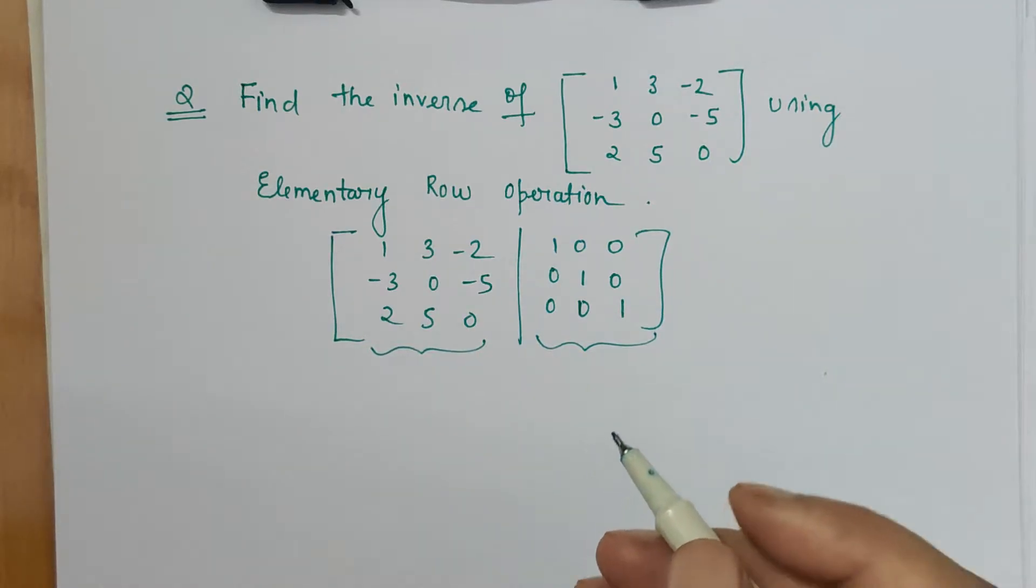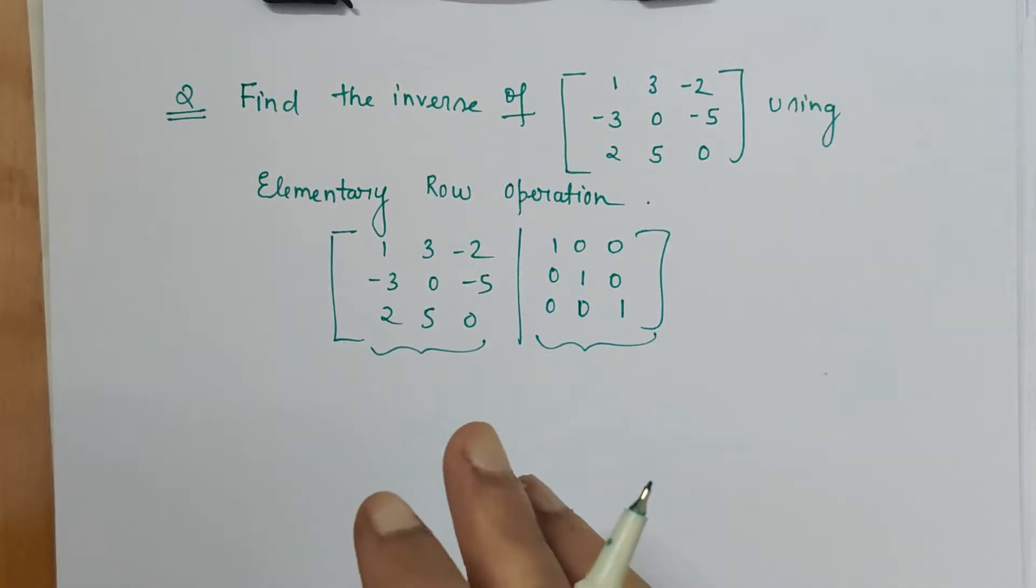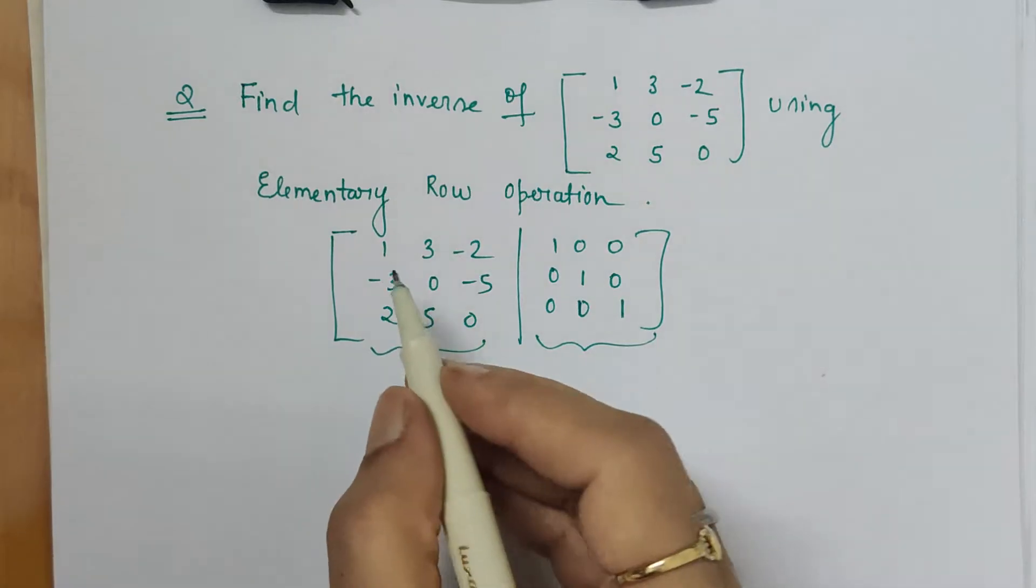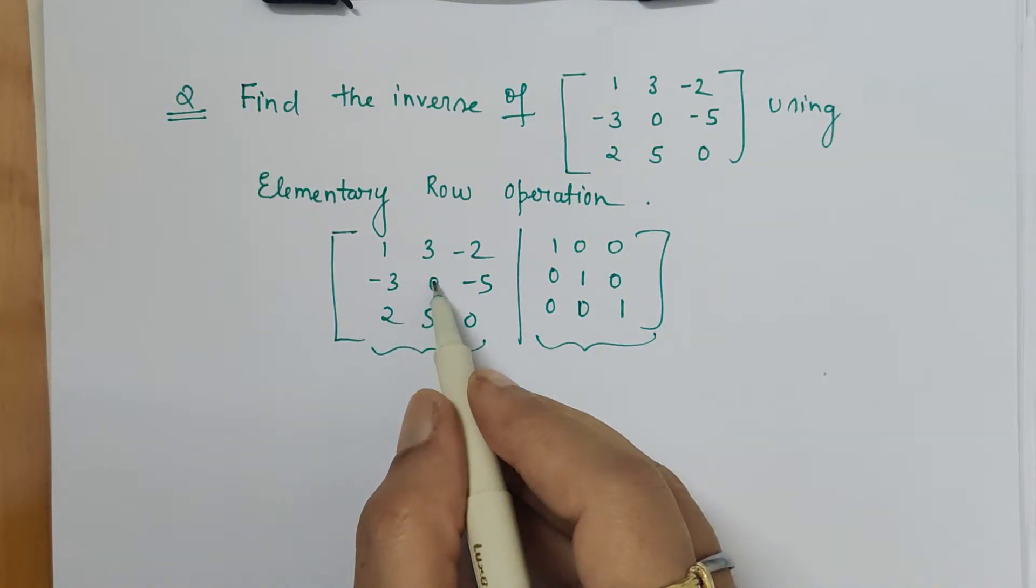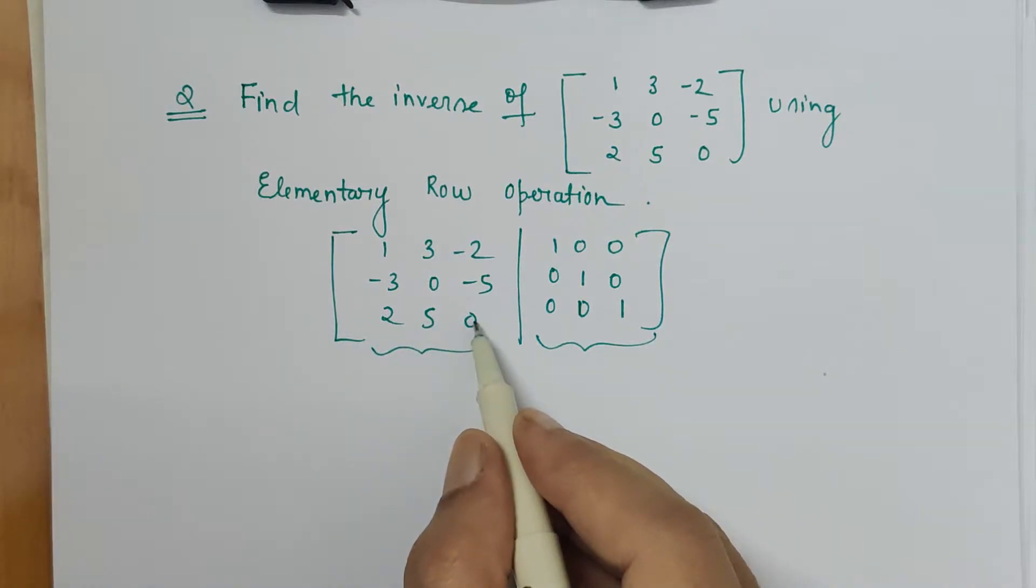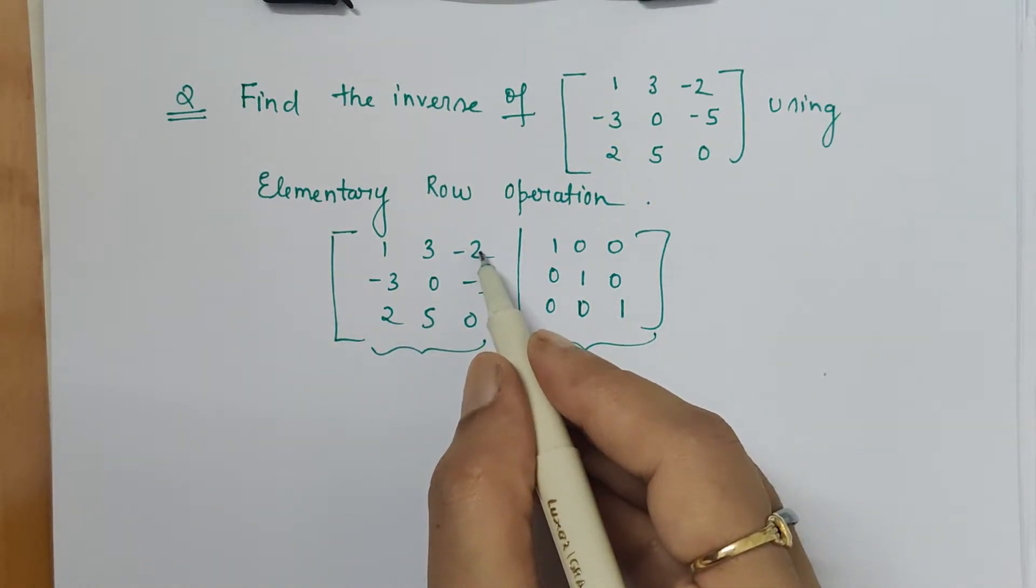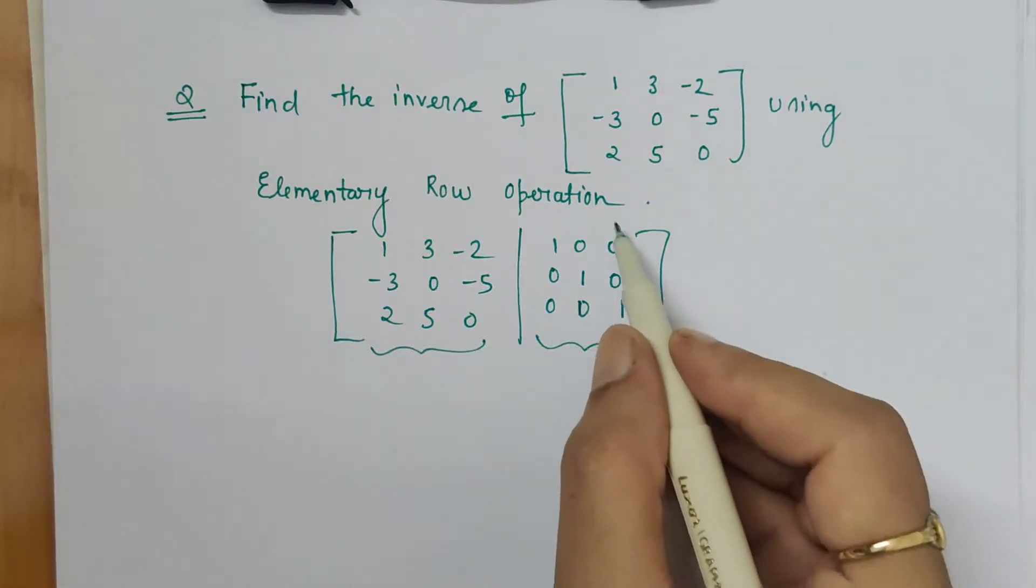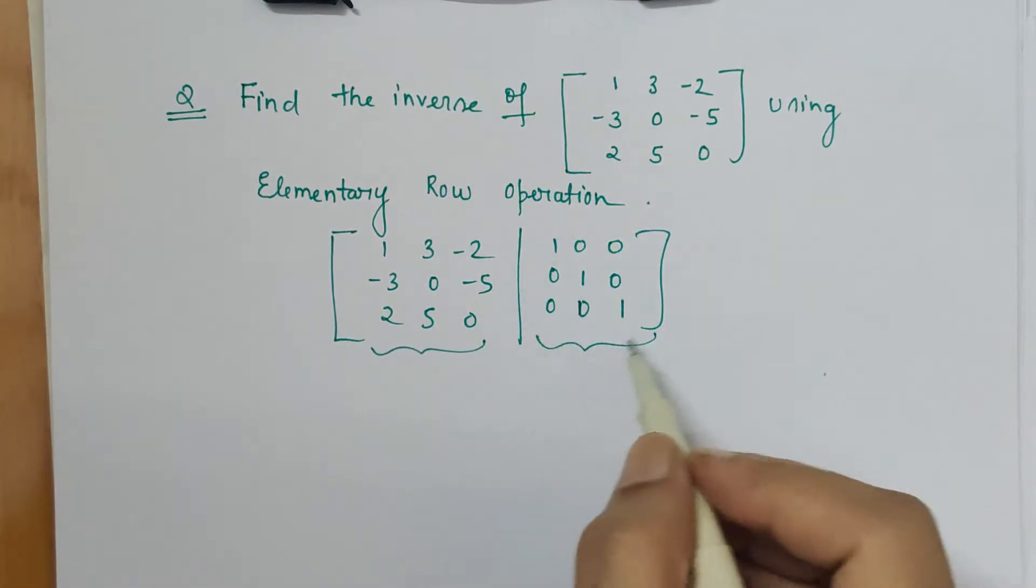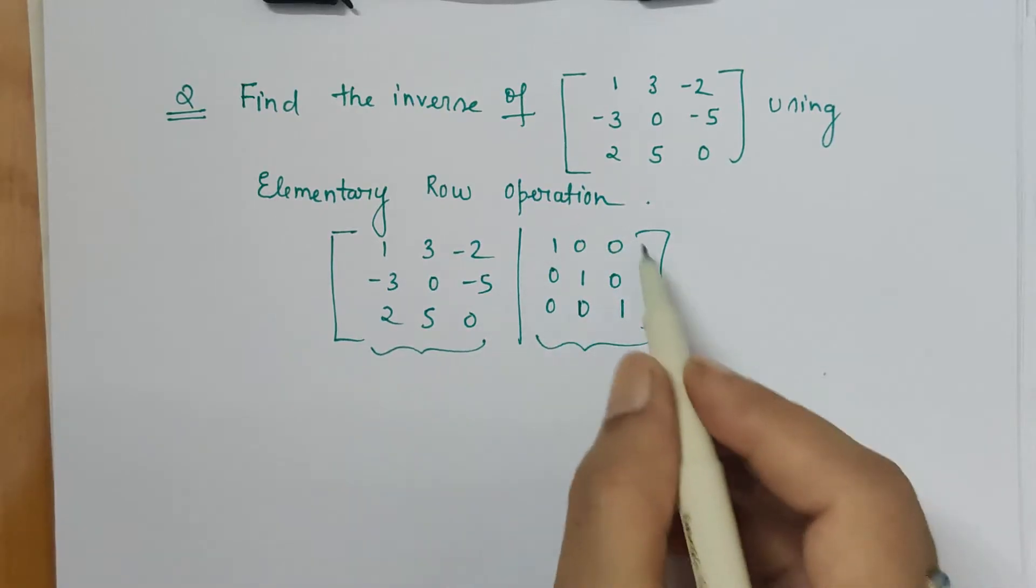Let's see how I am going. Our whole algorithm will be based on only these three steps: make this entry 1, below entry 0; this entry 1, above and below entry 0; and this as 1 and the above two entries 0. Whatever operations we apply will also be applied over here, which will give us the inverse in the last step.